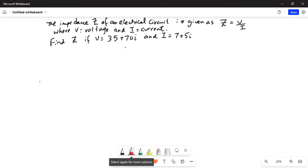Let's solve this problem. Solution: Z is equal to V over I, which is 35 plus 70i divided by 7 plus 5i.